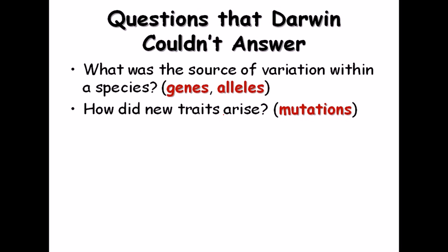A question Darwin could not answer at the time — also raised in his famous book 'On the Origin of Species by Means of Natural Selection' — was: what is the source of variation within a species, and how did new traits arise? Darwin didn't know at the time, but he suggested these were questions future scientists must answer. Today we know about genes, alleles, variation during chromosome segregation, crossing over, recombination, and transposition.